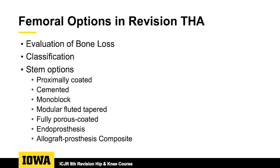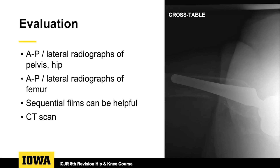When evaluating bone loss, AP and lateral radiographs of the pelvis and hip, specifically focused on the femur, are pretty straightforward. Lateral radiographs of the crosstable at the hip and lateral radiographs of the femur can be really helpful. We heard in the last talk about the necessity sometimes for osteotomy to take out deformity.